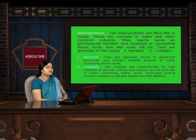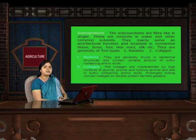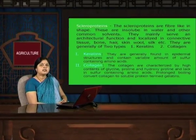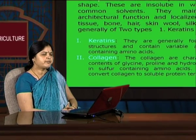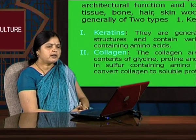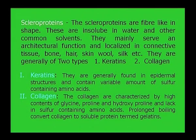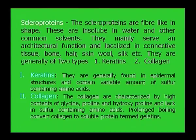Another class of protein is scleroproteins. Unlike globular proteins, scleroproteins are fiber-like in shape. They are insoluble in water and other common solvents. Their main function is architectural structure and they are localized in connective tissue, bone, hair, skin, wool, silk, etc. The scleroproteins are of two types: keratins and collagens.